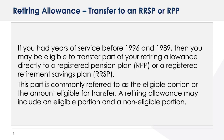If you had years of service before 1996 and 1989, then you may be eligible to transfer part of your retiring allowance directly to a registered pension plan or RPP, or a registered retirement savings plan or RRSP. This part is commonly referred to as the eligible portion or the amount eligible for transfer. A retiring allowance may include an eligible portion and a non-eligible portion.